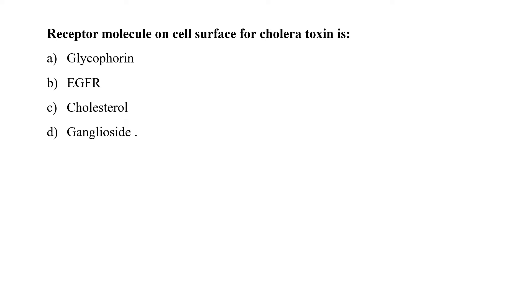Receptor molecules on the cell surface for cholera toxin is glycophorin, EGFR, cholesterol, or gangliosides. The membrane receptor for cholera toxin on the cell membrane appears to be a complex which contains the ganglioside GM1. So option D is the correct answer.